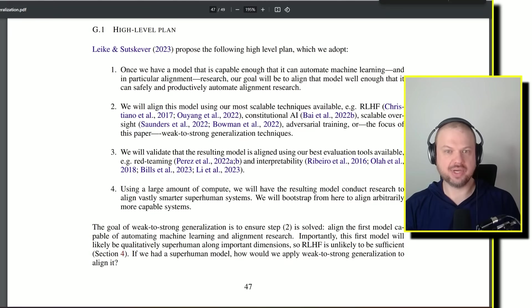So we're trying to create an AI that will be able to research how to create safe AI as it gets stronger and better and more beyond our understanding. And so we will align this model using our most scalable techniques available, RLHF, reinforcement learning, human feedback, constitutional AI, scalable oversight, adversarial training, and this new approach, the focus of this paper, weak to strong generalization techniques.